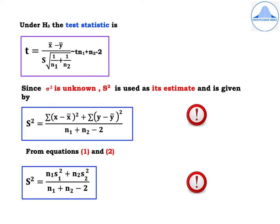Let us now learn the test statistic formula for the t-test for equality of means. Under H0, the test statistic is T = (x̄ − ȳ) / (S · √(1/N1 + 1/N2)), which follows a t-distribution with N1 + N2 − 2 degrees of freedom.